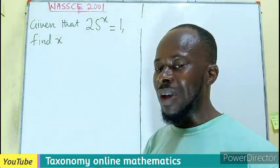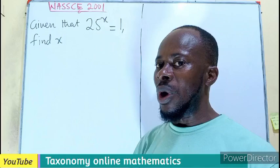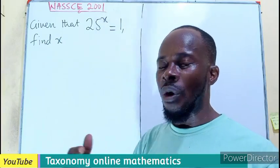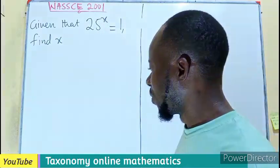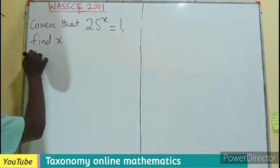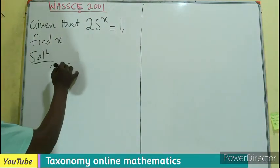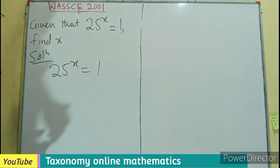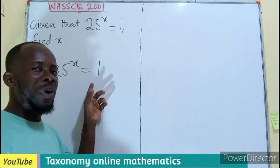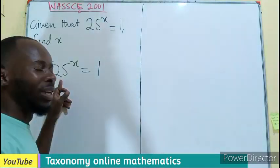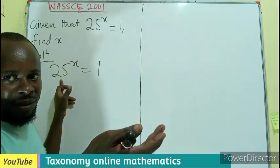We know in the business of exponential equations we always want to have equal base or equal exponent. So now what do we do if we are given 25 to the exponent x equals 1? How do we express 1 to be the base of 25 with an exponent?